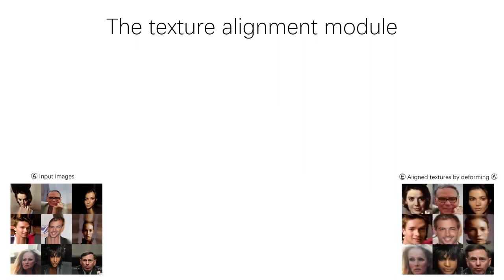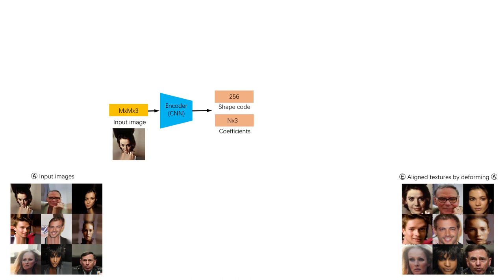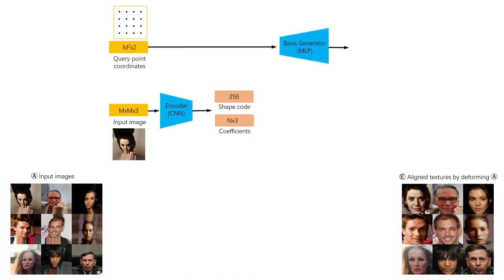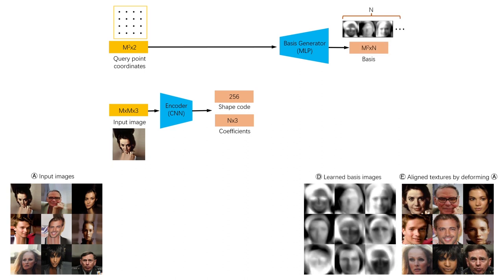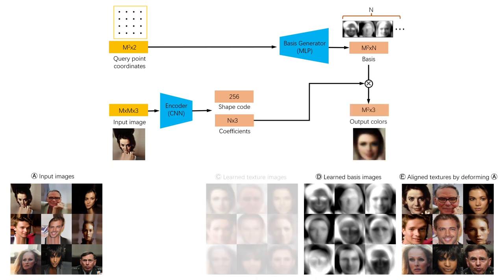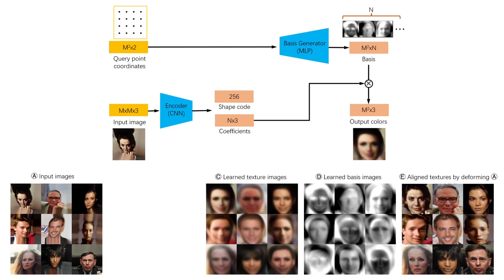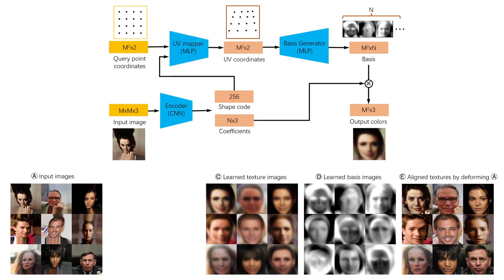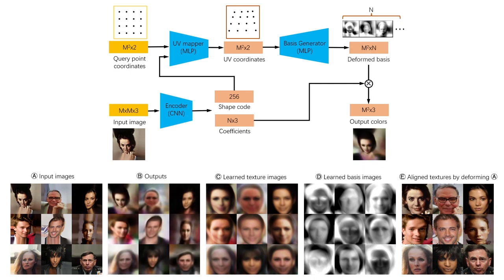Let me start with a 2D example. We want to align face images in arbitrary poses into a canonical pose. We first encode the input image into a shape latent code and some coefficients. Then we pass the coordinates of image pixels to the basis generator MLP to obtain basis images. These basis images are shared by all images in the dataset. Now we can multiply the basis images with the coefficients to obtain the output colors. However, we need to deform the output images to match the poses of the input images, so that we can use the input images to supervise the training. Therefore, we add a UVMapper MLP to deform the query point coordinates into UV coordinates. We use the UV coordinates to query the basis generator to obtain deformed bases and the real output. Then we can use the reconstruction loss to train these networks. To obtain high-quality images, we simply use the UVMapper network to deform the input images.